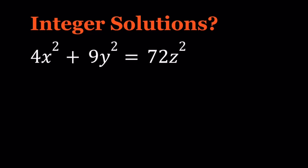Hello everyone. In this video we're going to be solving a nice Diophantine equation. This problem is from a book called Mathematical Olympiad Treasures by Titu Andreescu. We have 4x squared plus 9y squared equals 72z squared, and we're looking for integer solutions to this equation.